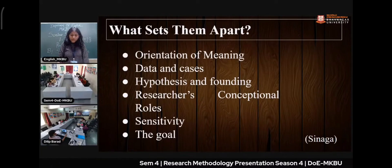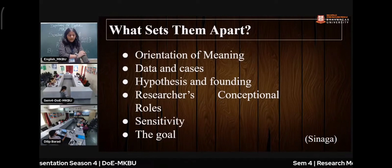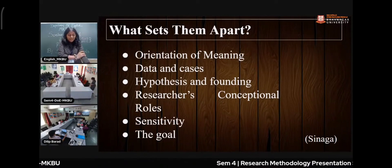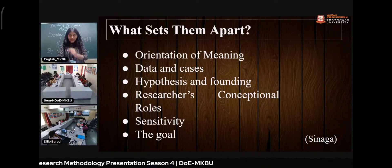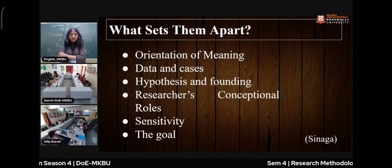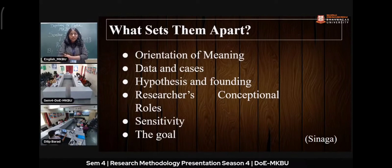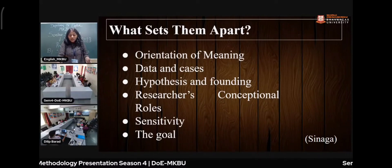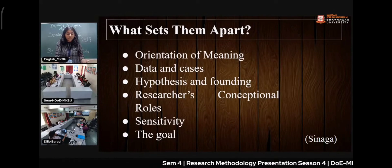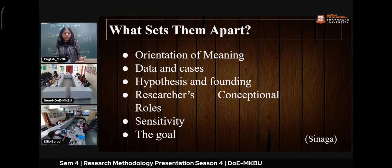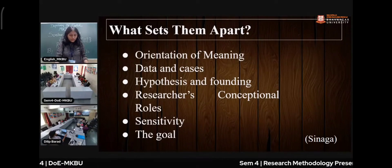Now, what sets them apart? The first point is orientation of meaning. Qualitative research focuses on studying a phenomenon, while quantitative research focuses on measuring and quantifying the content of research data. For example, if we want to analyze the color blue: applying qualitative research, we explore how people interpret blue — like saying the color feels cool. Applying quantitative research, it measures the blueness of the color blue.